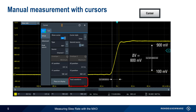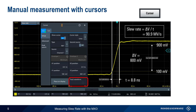The vertical, or X markers, are then placed on the points where the waveform crosses the 90% and 10% levels. The time difference, delta X, is then read off the screen. Here the value is 8.8 nanoseconds. Using these values we can then compute slew rate by dividing delta V by delta T to get 90.9 megavolts per second. Note, however, that this value can also be read directly off the screen from the cursor values displayed along the bottom.